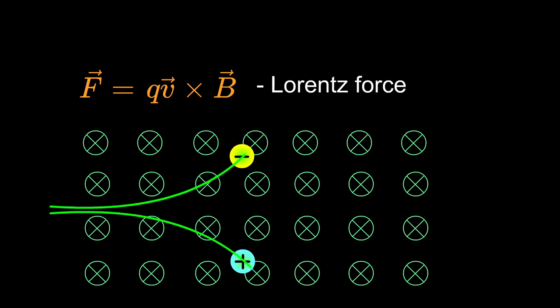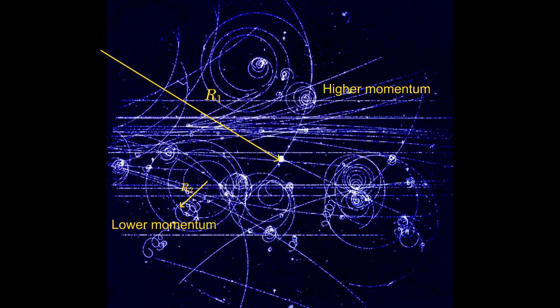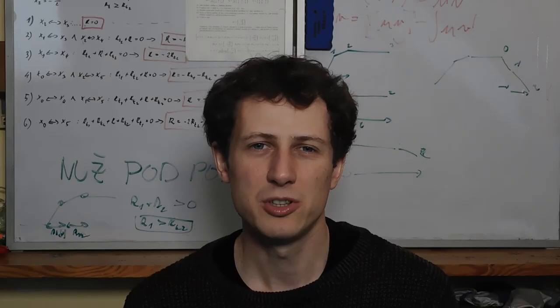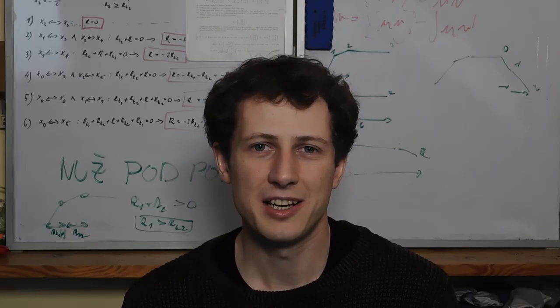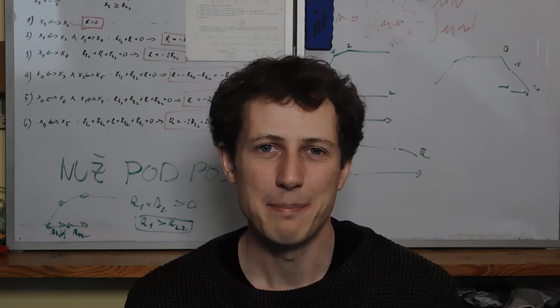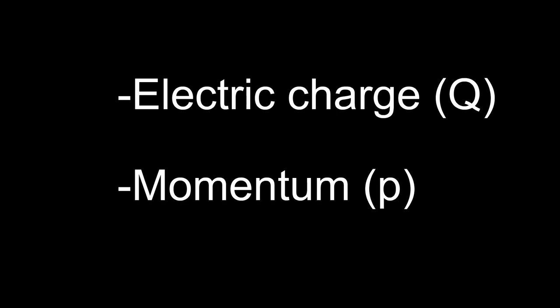Then you can not only detect the charge of the particle, but it also tells you something about its momentum depending on the track radius. The bottom line of all this is that we can create detectors that can measure the electric charge of the particle and the momentum of the particle.